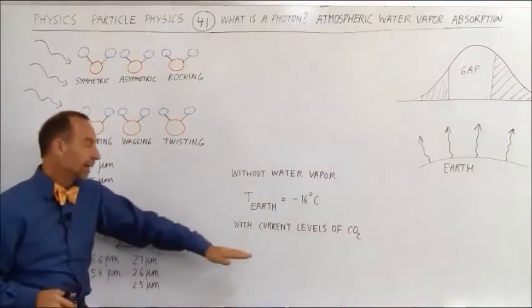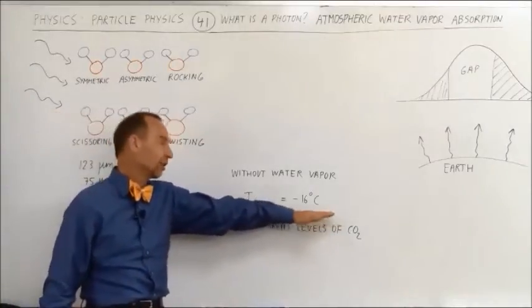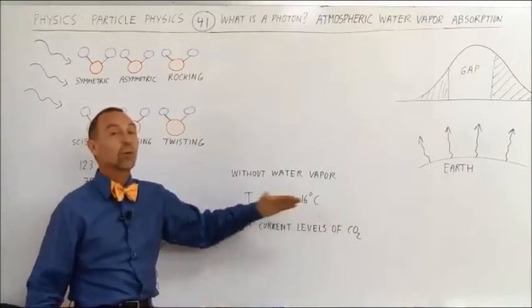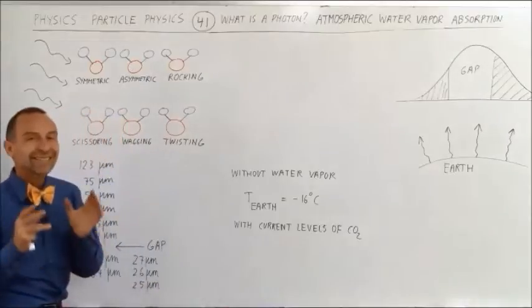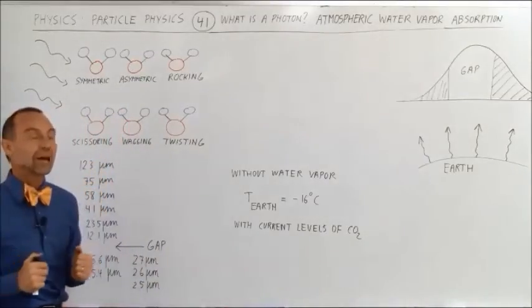Now, it turns out that even with the current levels of carbon dioxide, the temperature would be minus 16 degrees centigrade. Water vapor accounts for at least 90% of the heat trapping capability of the atmosphere.